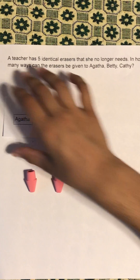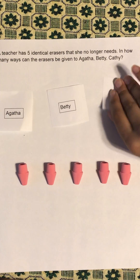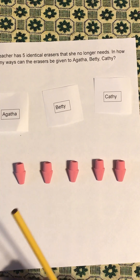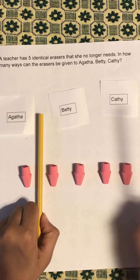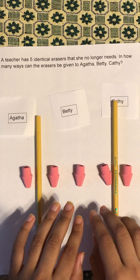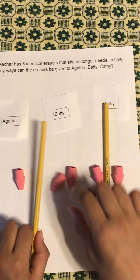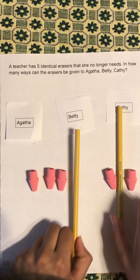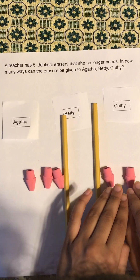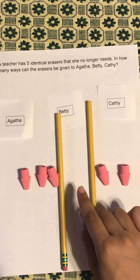Let's say we have Agatha, Betty, and Kathy. We have these dividers to see which erasers belong to whom. In this example, Agatha gets this eraser, Betty gets these erasers, and Kathy gets this eraser. In another example, Agatha gets these erasers, Kathy gets these erasers, but Betty doesn't get any erasers.